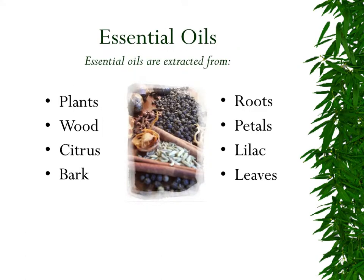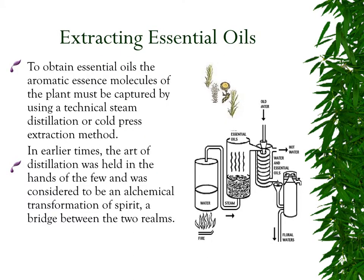Essential oils can be extracted from a variety of material, including plants, wood, citrus, bark, roots, petals, lilac, and leaves. Extracting essential oils can be done in two ways. To obtain the essential oils, the aromatic essence molecules of the plant must be captured by using either a technical steam distillation process or cold press extraction method.